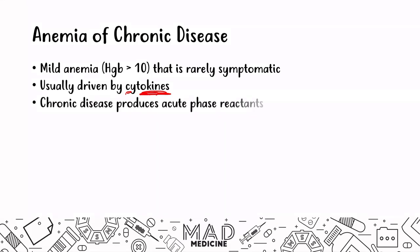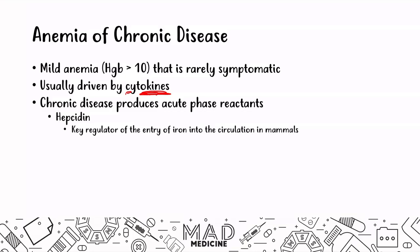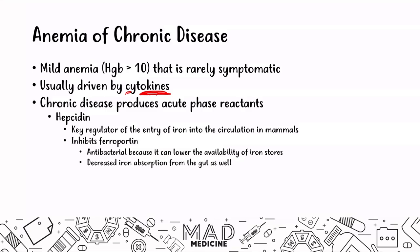Chronic disease also produces acute phase reactants, one of which is hepcidin. Hepcidin is a key regulator of the entry of iron into circulation — it inhibits ferroportin, the protein that allows iron to move from the gut into the bloodstream. Because it inhibits ferroportin, hepcidin can act as an antibacterial by decreasing the availability of iron for bacteria. But it also decreases iron absorption in the gut, leading to iron deficiency.